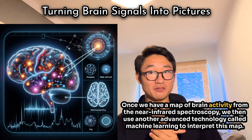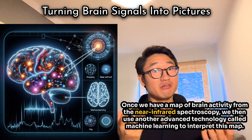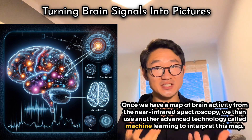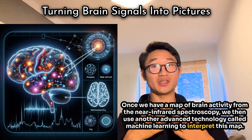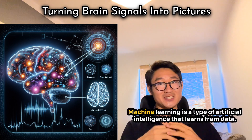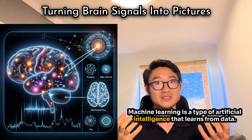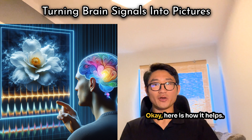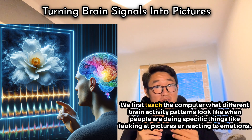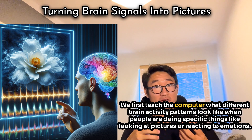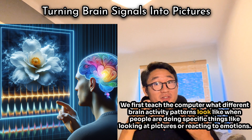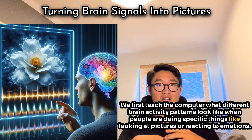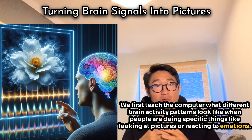Once we have a map of brain activity from the near-infrared spectroscopy, we then use another advanced technology called machine learning to interpret this map. Machine learning is a type of artificial intelligence that learns from data. We first teach the computer what different brain activity patterns look like when people are doing specific things, like looking at pictures or reacting to emotions.